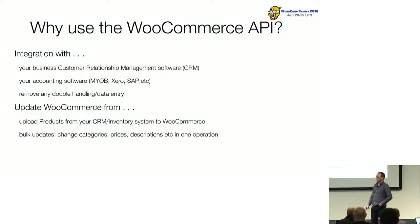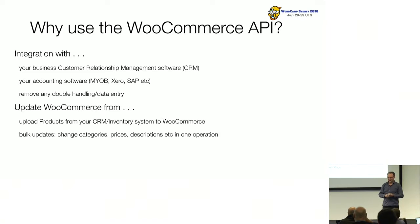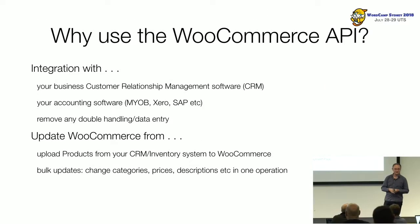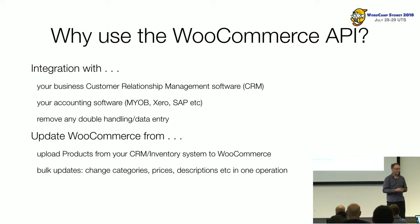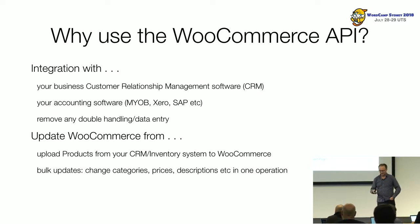So why would you use the WooCommerce API? For a lot of people it comes down to one word: integration. In our business, we want to get orders out of WooCommerce into our CRM system and then into Xero, our accounting software. The whole point is to remove double data entry and double handling, which leads to mistakes. We've also got customers with complex inventory systems they've been using for years who want to get their inventory data pushed up into WooCommerce — they don't want to maintain two separate inventory systems. They just want a single source of truth. You might also want to do bulk updates: drop the price of certain products, change descriptions, and push them all up in one go.